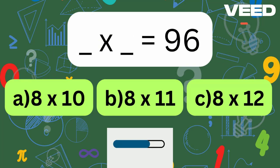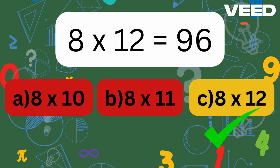What times what equals 96? Yes, 8 times 12 is equal to 96.